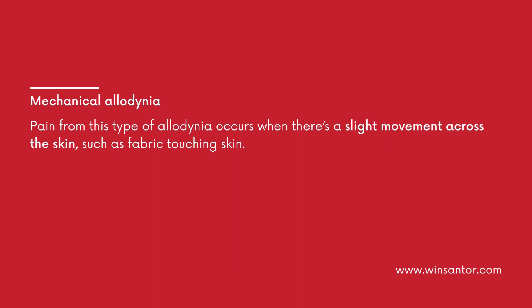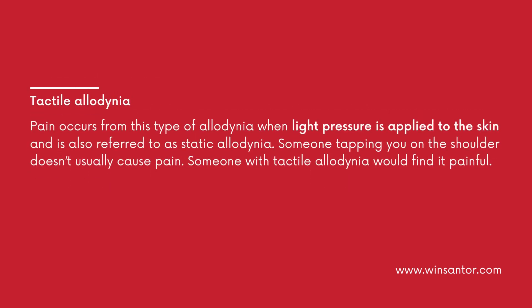Pain from mechanical allodynia occurs when there's a slight movement across the skin, such as fabric touching skin. Tactile allodynia — also referred to as static allodynia — is when pain occurs from light pressure applied to the skin. For example, someone tapping you on the shoulder doesn't usually cause pain, but someone with tactile allodynia would find it painful.